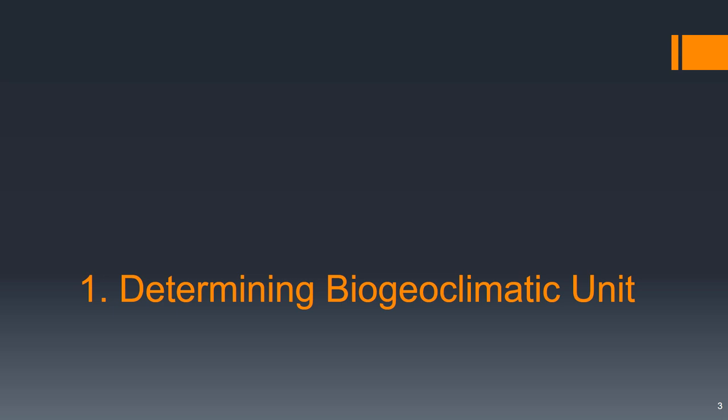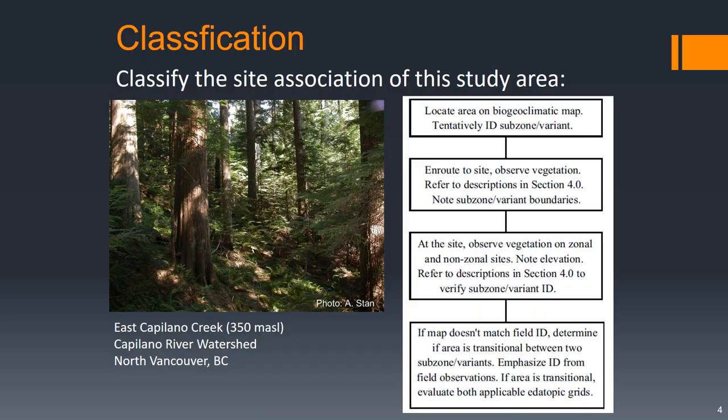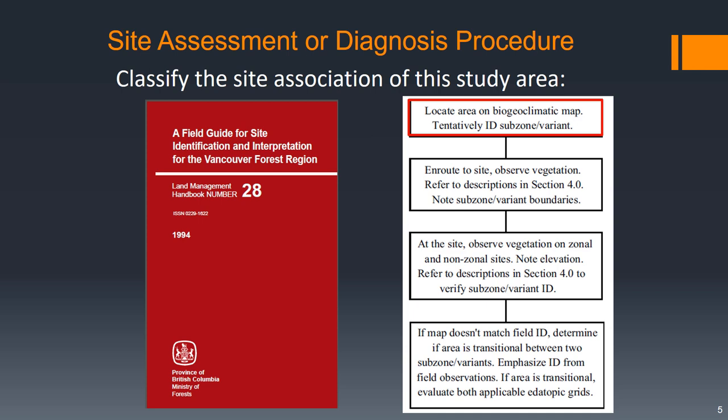Let's begin by figuring out the biogeoclimatic unit of the area we're going to sample. Here's a photo of the study site we're going to classify. The first thing we would do is get our field guide — in this case it's field guide 28 for the Vancouver Forest region — and we'll use this and maps that we can find online to locate the area on the biogeoclimatic map and get a tentative ID for the biogeoclimatic subzone and variant if applicable.